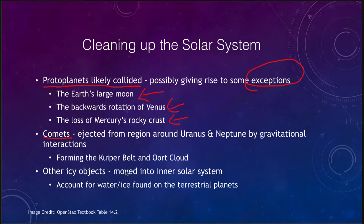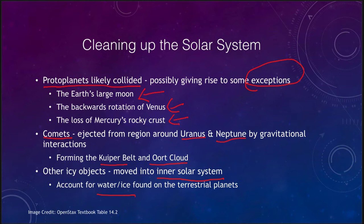Comets in the Kuiper belt and the Oort cloud could have been ejected from the outer part of the solar system by interactions with the planets. Planets would have collided with each other, making them larger and clearing out the little debris, and they would have ejected some of the material out into the outer solar system. But not only were icy objects ejected outward — some could have been moved into the inner solar system. This accounts for water and ice we find on things like Earth and Mars, since planetesimals that condensed in the outer solar system could have come inward and collided with the Earth, accounting for a proportion of our water here on Earth today.